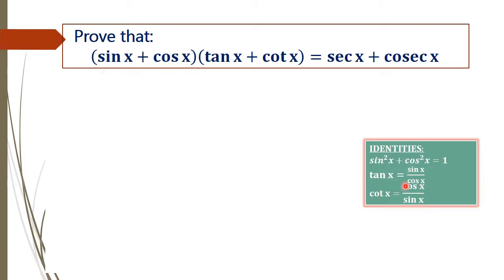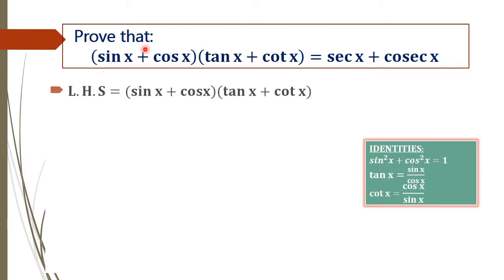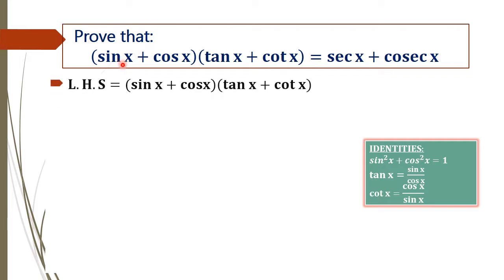These are the three identities we are mainly using. By taking the left hand side we get (sin x + cos x)(tan x + cot x). In the next step we simplify by splitting tan x as sin x / cos x and cot x as cos x / sin x.